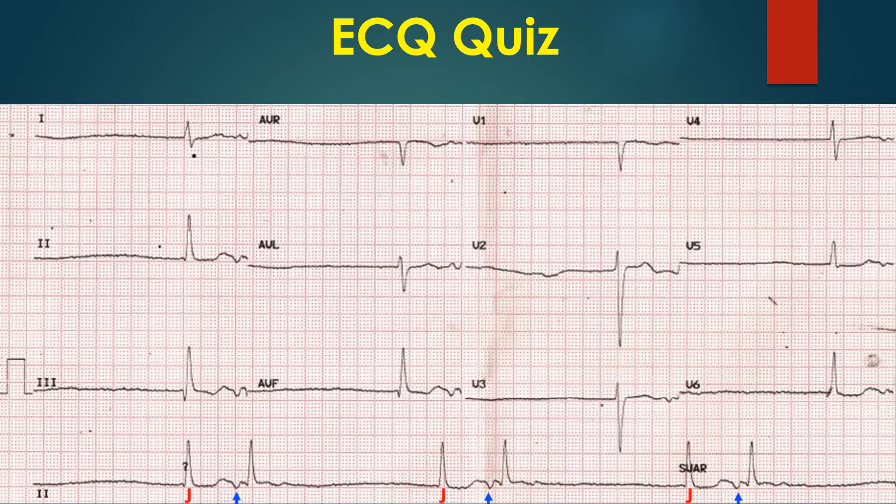The beats marked as J are junctional escape beats occurring at a slow rate. They are followed by inverted P-waves in inferior leads prior to the next QRS complex, marked by blue upward arrows. These beats could be either beats originating from the low atrium, i.e., coronary sinus rhythm, or from the high junction. Inverted P-waves preceding QRS complexes can be seen in high junctional rhythm, as conduction into the atria is from below upwards, away from the positive electrodes of inferior leads.